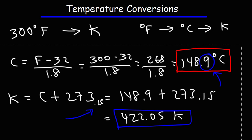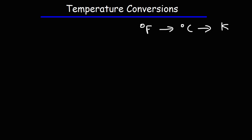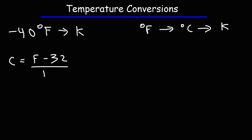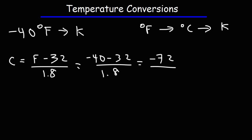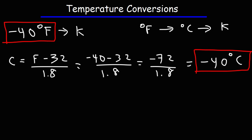For practice, let's try a negative temperature value. Convert negative 40 degrees Fahrenheit to Kelvin. Converting Fahrenheit to Celsius first: C = (F − 32) / 1.8, with F = −40. Negative 40 minus 32 is −72, and −72 divided by 1.8 is −40. So this is the one temperature at which the Fahrenheit value equals the Celsius value — something that actually appears in test problems, so keep that in mind.